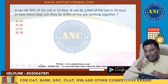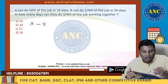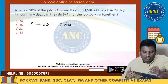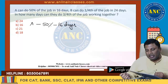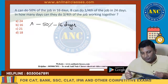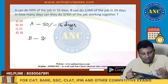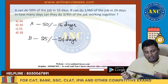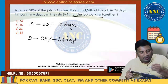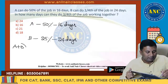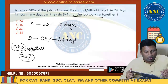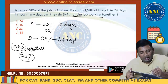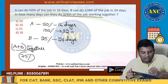This is a previous year examination question. A can do 50% of the job in 16 days. B can do one-fourth (25%) of the job in 24 days. In how many days can they do three-fourths of the job together? Converting: A does 100% in 32 days.